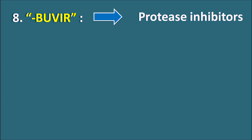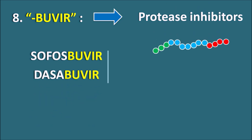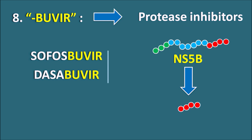Eighth one is the suffix -buvir. This again indicates protease inhibitors. We already saw one type ending with -asvir, and this is a second suffix. Drugs include sofosbuvir and dasabuvir. These drugs act on a different protease, NS5B. Since the protease ends with the letter 'B', the suffix starts with 'B'. NS5A drugs have the suffix -asvir starting with 'A', and NS5B drugs have the suffix -buvir starting with 'B'. These drugs inhibit NS5B-mediated cleavage and release of viral protein, thereby inhibiting viral replication. NS5B protease is present in hepatitis C, so these drugs are useful in the treatment of hepatitis C infection.